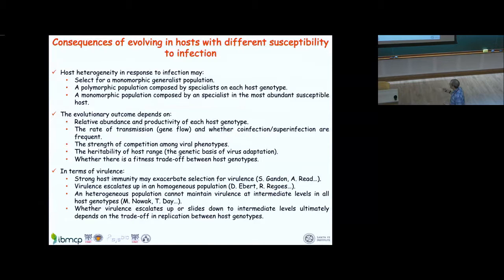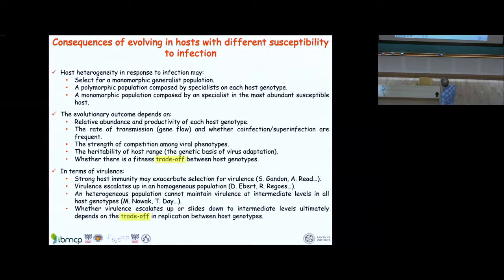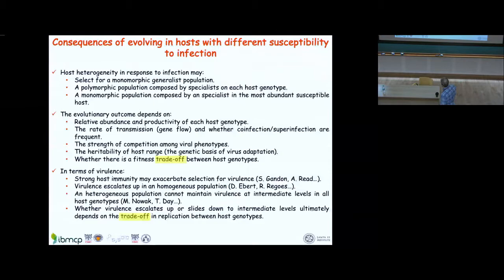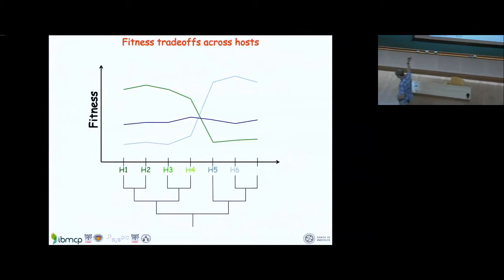Work illustrating this theory is by Martin Nowak, Troy Day, and others. Whether virulence scales up or slides down to intermediate levels ultimately depends on the trade-off between replication among hosts — everything depends on trade-offs. I used the same trade-off slide from yesterday, but you can apply the same arguments considering the axes as genotypes of the same species. Some viruses are specialists, infecting some genotypes better than others; others are generalists, infecting every possible genotype equally well.